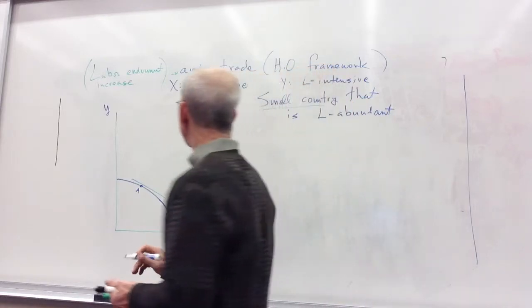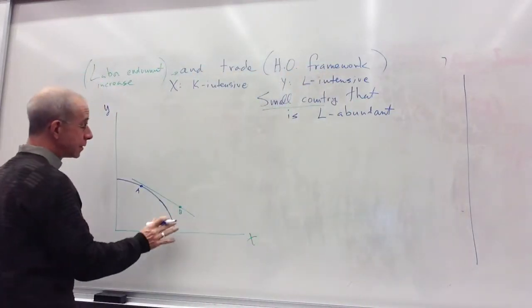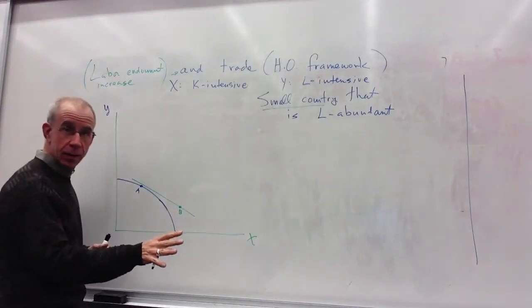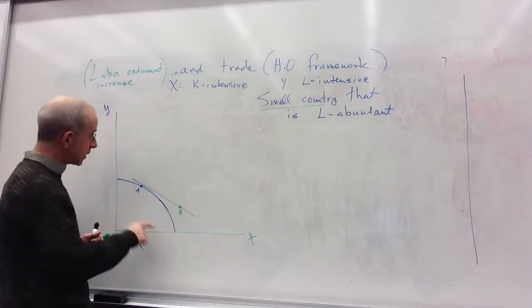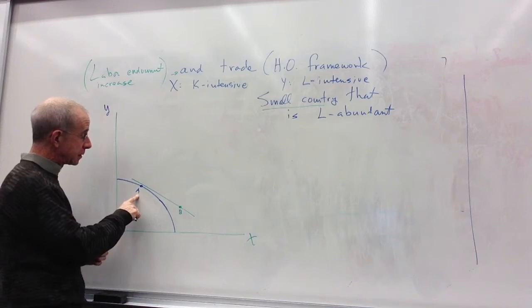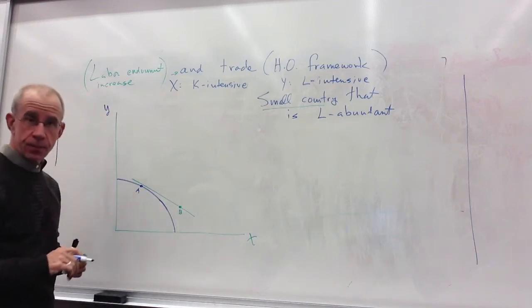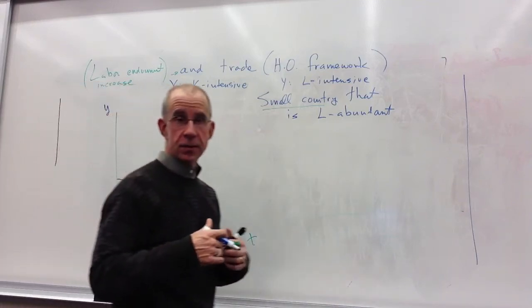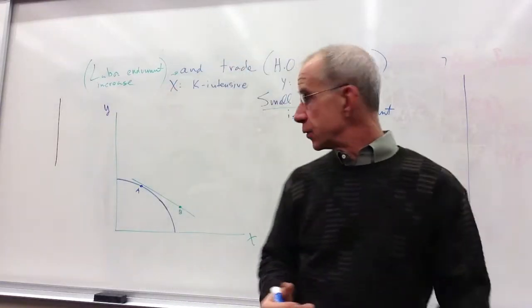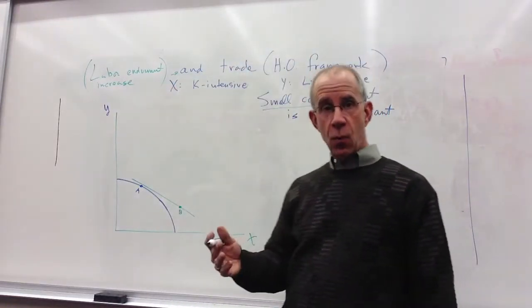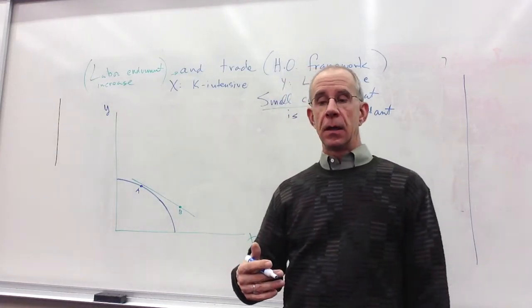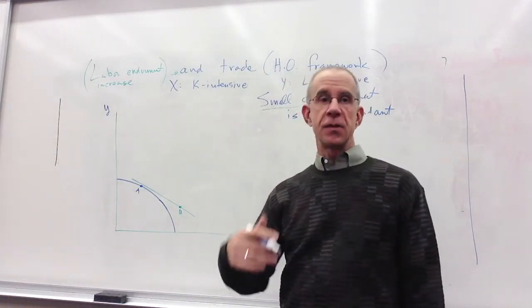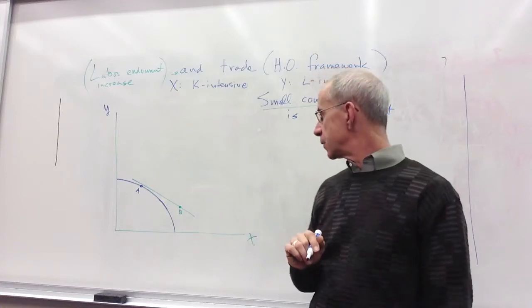First, we're going to depict the trade equilibrium with the initial capital stock where production takes place at point A and consumption takes place at point B for this labor-abundant country. So it is importing the capital-intensive good and exporting the labor-intensive good.